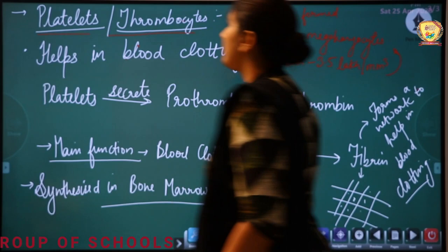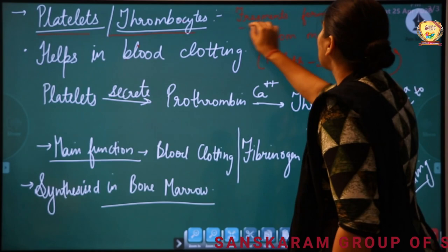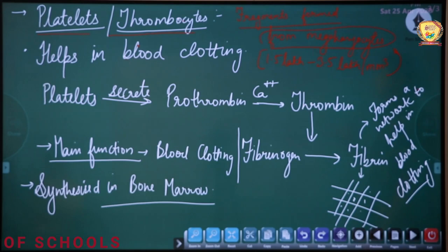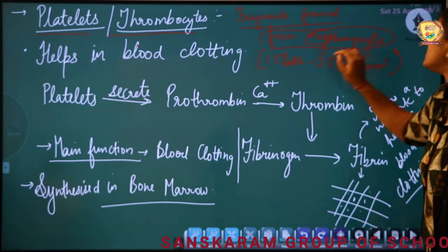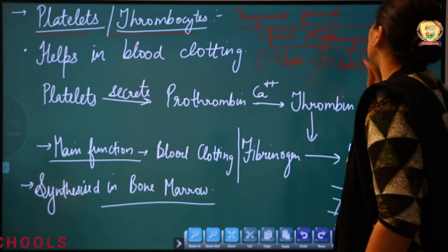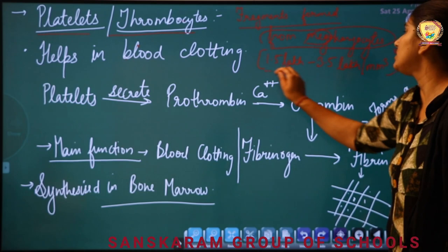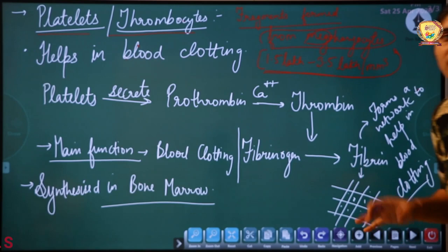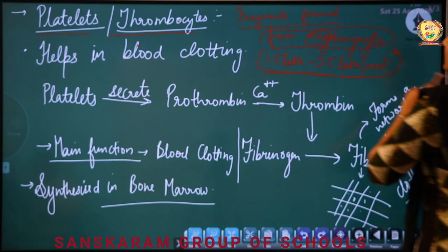Talking about platelets, also called thrombocytes. As per NCERT, platelets are fragments formed from megakaryocytes. Mega means large — so from very large cells, some fragments are formed which we call platelets or thrombocytes. Their concentration is 1.5 lakh to 3.5 lakh per mm³ of blood.